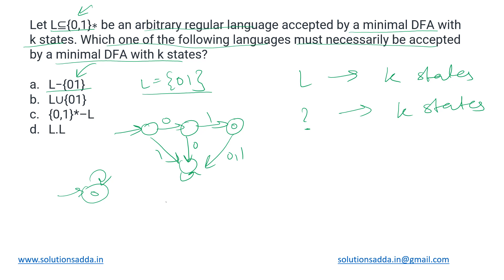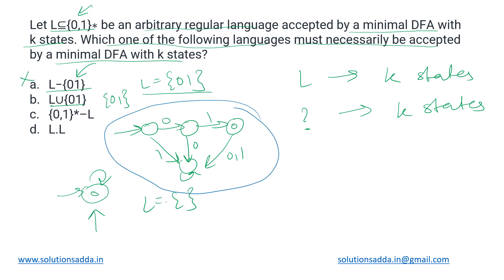Option B says L union {01}. Here we consider L to be the empty language — it accepts nothing, so its DFA needs just one single state. Taking its union with the string '01' produces the language that accepts only the single string '01', whose DFA requires more states. So L and L union {01} do not always require the same number of states, making Option B also incorrect.